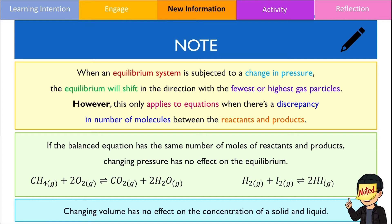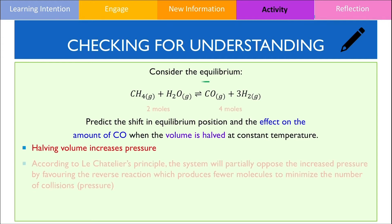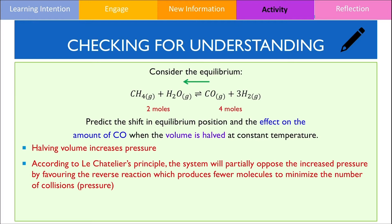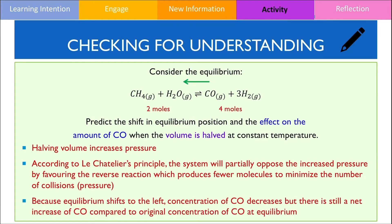Let's consolidate our understanding by answering a few questions. In the first question, predict which direction equilibrium will shift and the effect on the amount of carbon monoxide when the volume is halved. Decreasing volume increases pressure, and the system will partially oppose by favouring the reverse reaction because there are fewer molecules on the reactants side. Therefore, equilibrium shifts to the left, and the concentration of carbon monoxide will decrease. However, the concentration of carbon monoxide will still be higher than its original concentration prior to the change in volume.